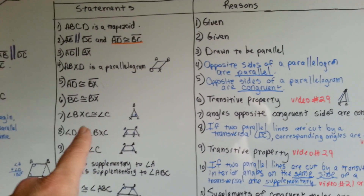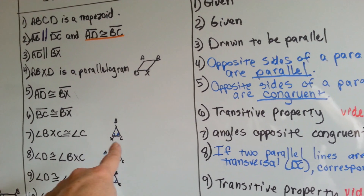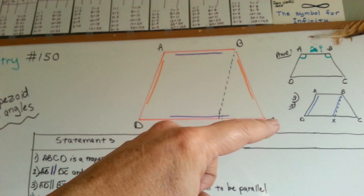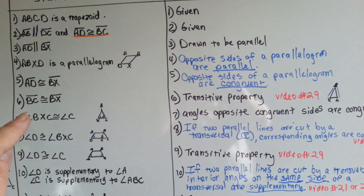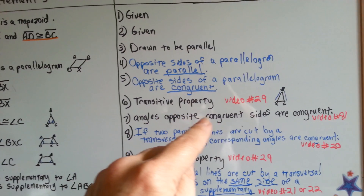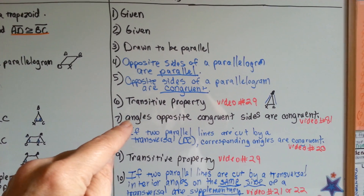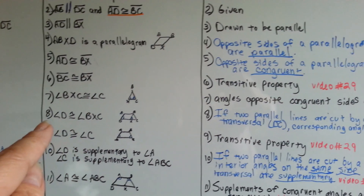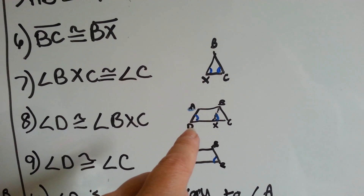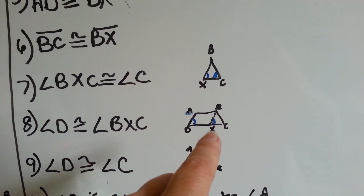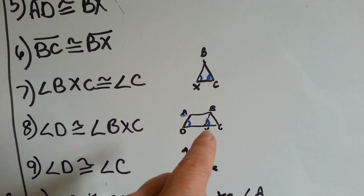Like an isosceles triangle: angle BXC — that's this corner one here — is congruent to angle C. So that angle is congruent to that angle. Angles opposite congruent sides are congruent — that's in video number 81. Number 8: angle D is congruent to angle BXC. D is congruent to the inside angle by X — that angle is congruent to the inside of our imaginary line.